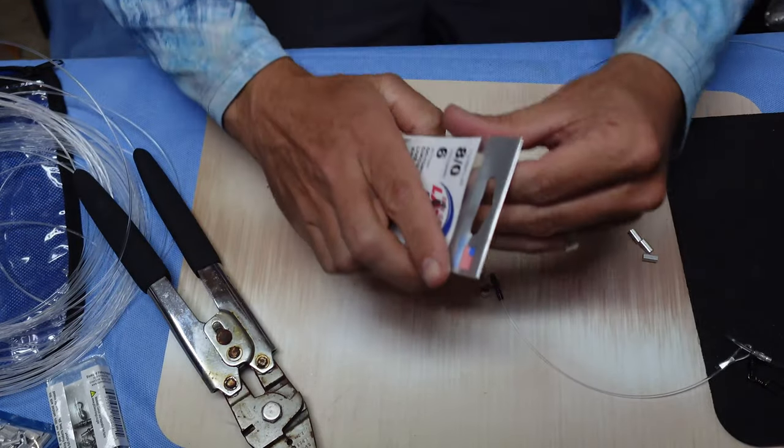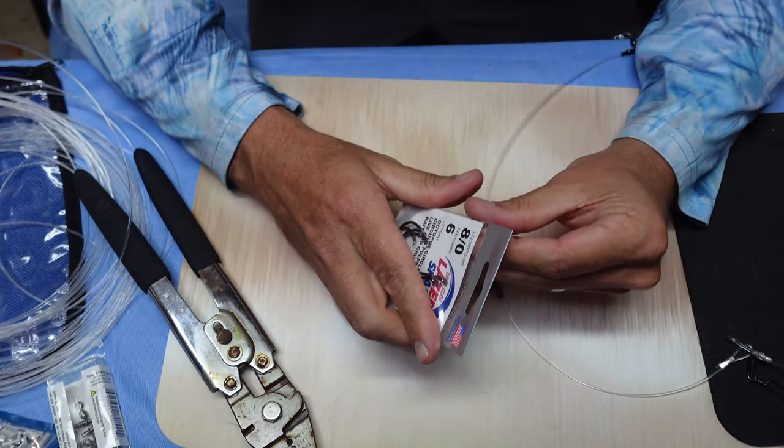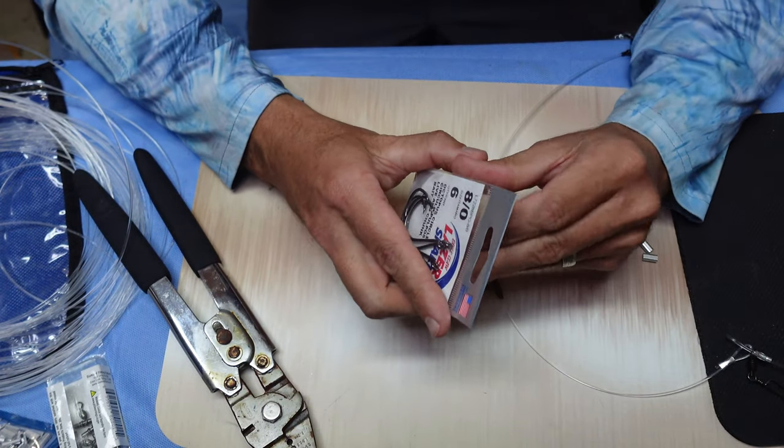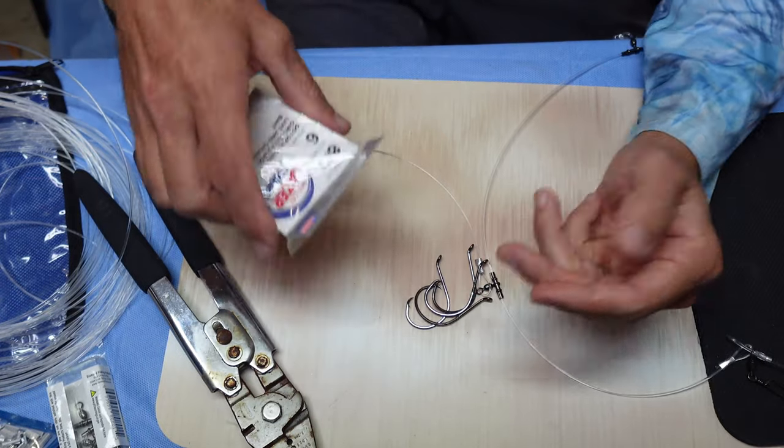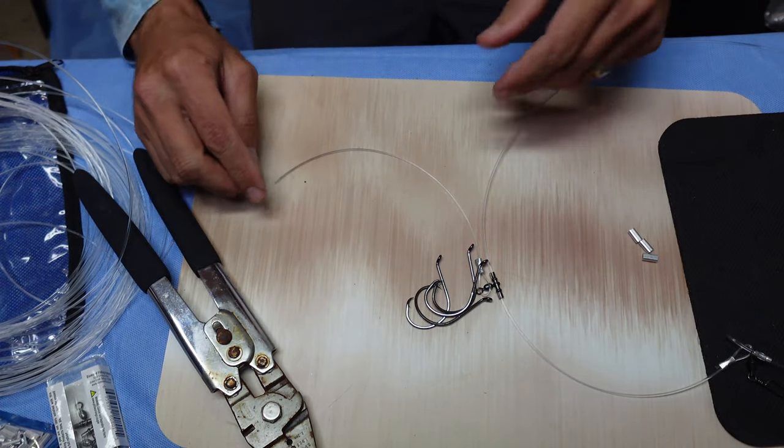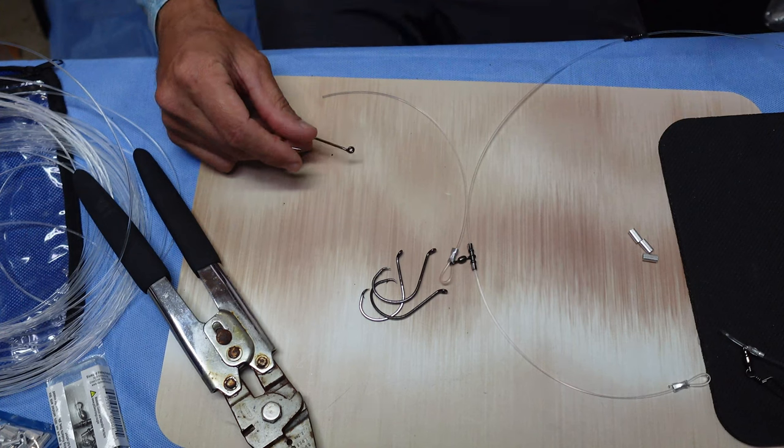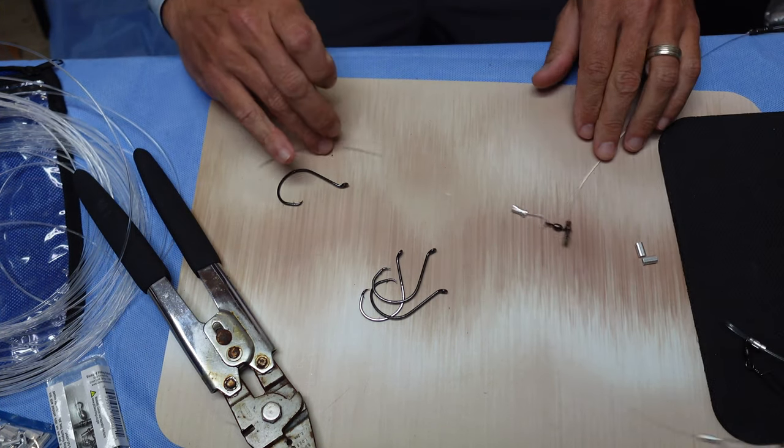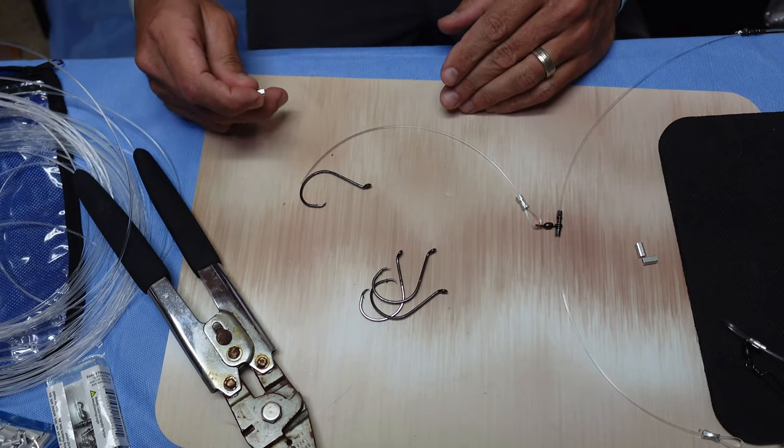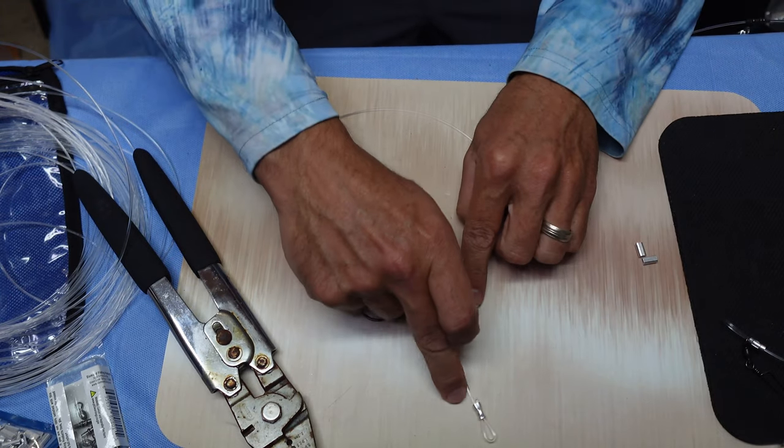I'm going to attach my hooks. These are 8-0s. You can use 7-0, 6-0. When I'm going for blue lines my hook will be a little smaller, it'll be around a 6-0. This rig is going to be primarily for grouper and bigger snapper like American red snappers that we catch up to 17 pounds. So here's the top of my rig here. I like to make sure my hook point is facing up.